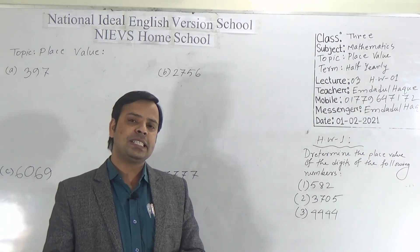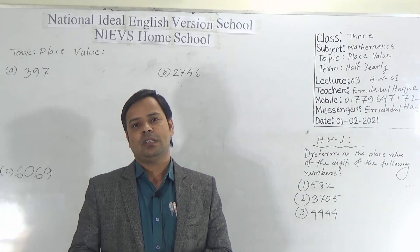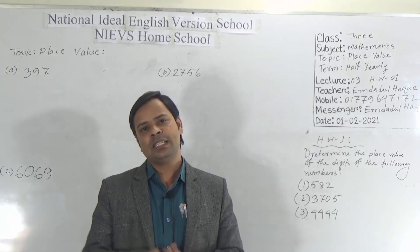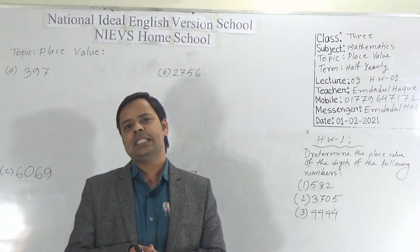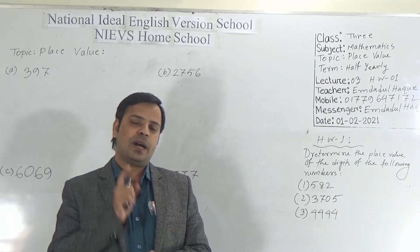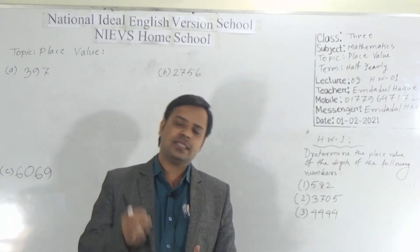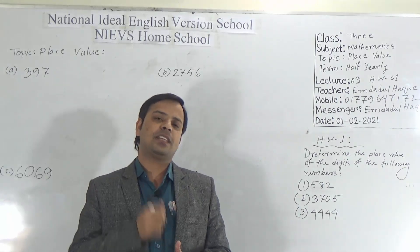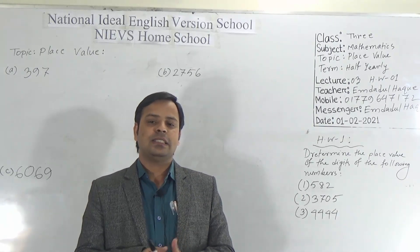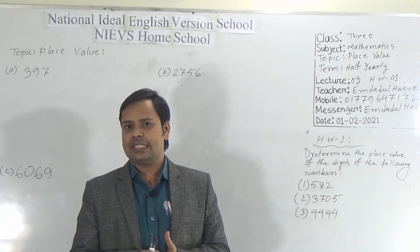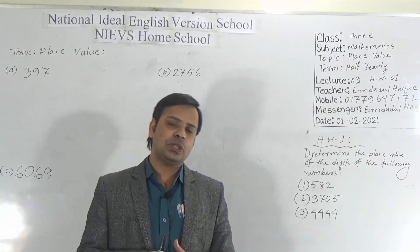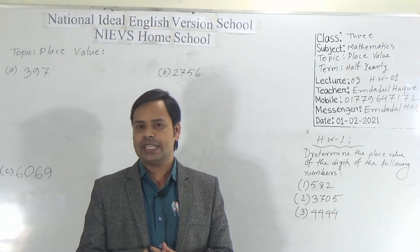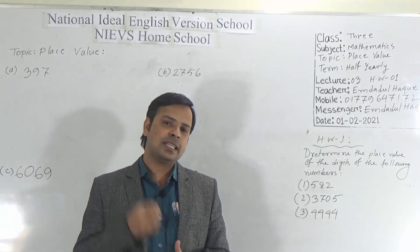Dear students, in this topic today I will show you how to determine the place value of the digits in a number. So first we have to know what is place value. Every digit has two types of value: one is intrinsic value, which means the value itself, and another is place value, which means the value of a digit in a number according to its place or position.